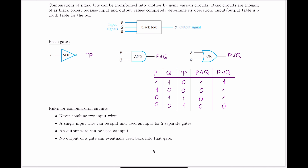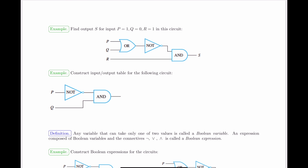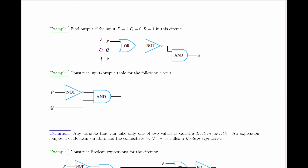Here's our first combinatorial circuit example with specific input values: P is one, Q is zero, and R is one. We're asked to find the output. Since the values are given, we can label them right on the circuit and trace what happens as they go through the indicated gates. P and Q — that is, one and zero — went into the OR gate. One OR zero gives a one on the output. That one then goes into a NOT gate, which negates it, giving zero on the output.